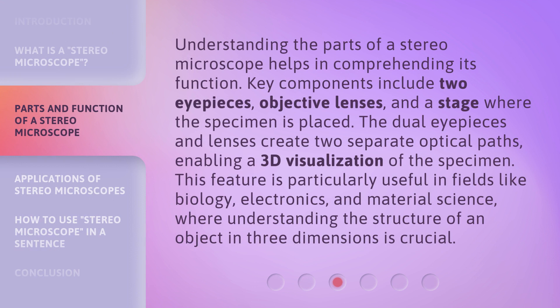Understanding the parts of a stereomicroscope helps in comprehending its function. Key components include two eyepieces, objective lenses, and a stage where the specimen is placed. The dual eyepieces and lenses create two separate optical paths, enabling a 3D visualization of the specimen. This feature is particularly useful in fields like biology, electronics, and material science, where understanding the structure of an object in three dimensions is crucial.